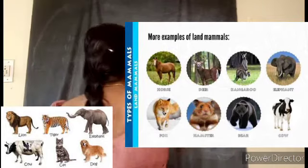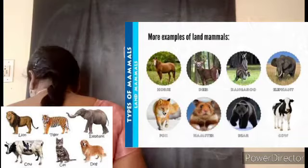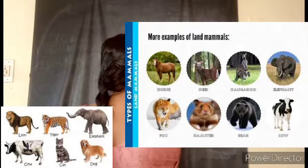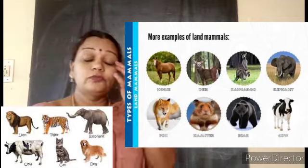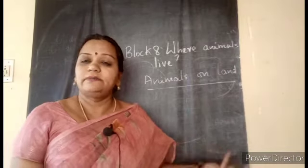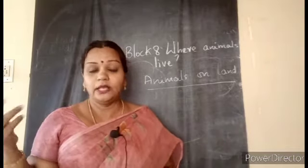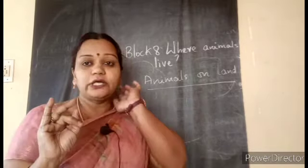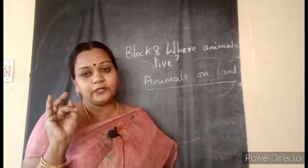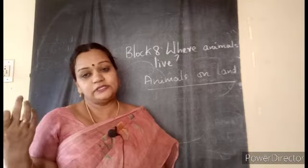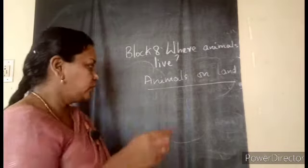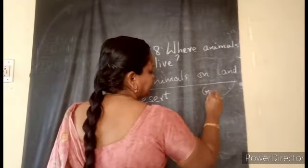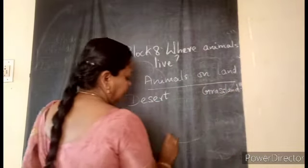Now animals on land in detail — we will discuss three categories. Landforms are not the same: some places are high mountains, sometimes a desert area, sometimes a grassland. So today we are going to consider three different landforms and how animals are able to live there. First is desert, second grasslands, and then high mountains.